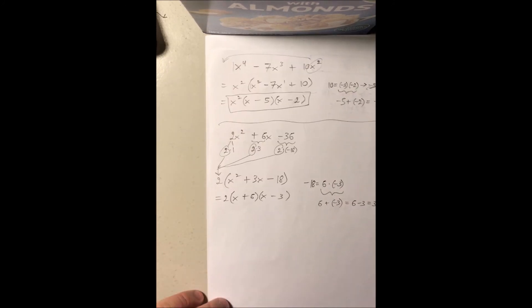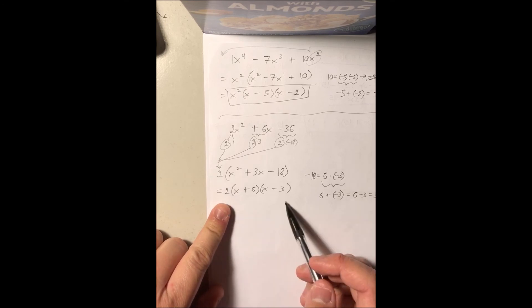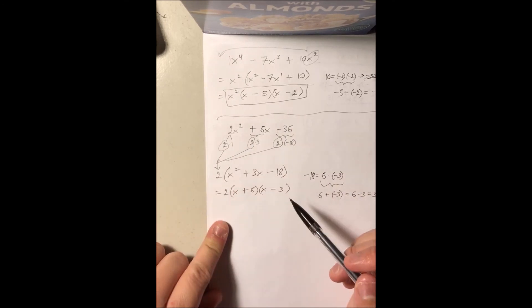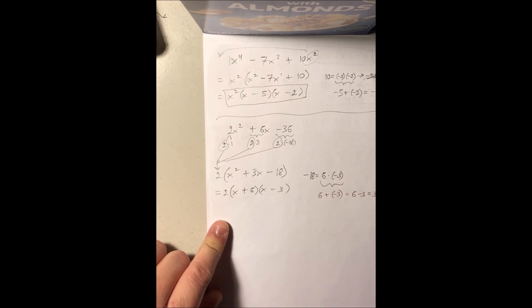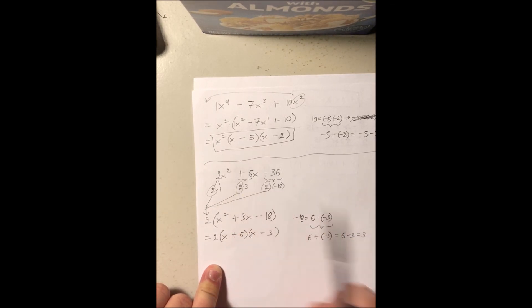You can check that this is the factored form of this expression, either by FOILing or using the box method I showed before. And do the same check for the fourth example on top here.